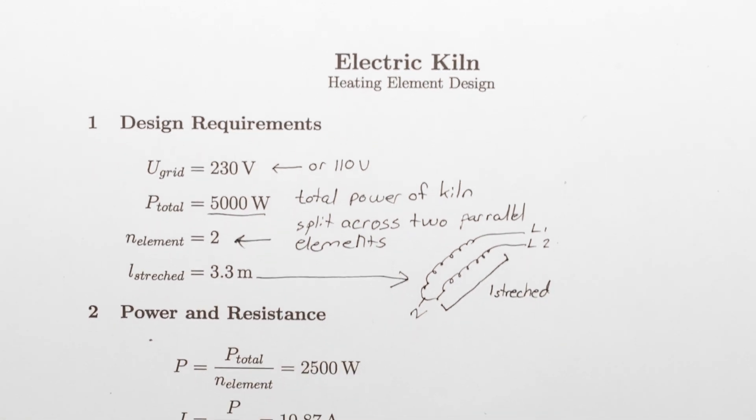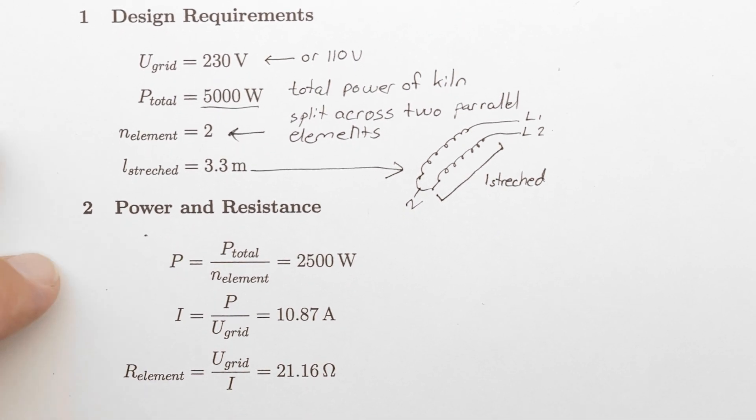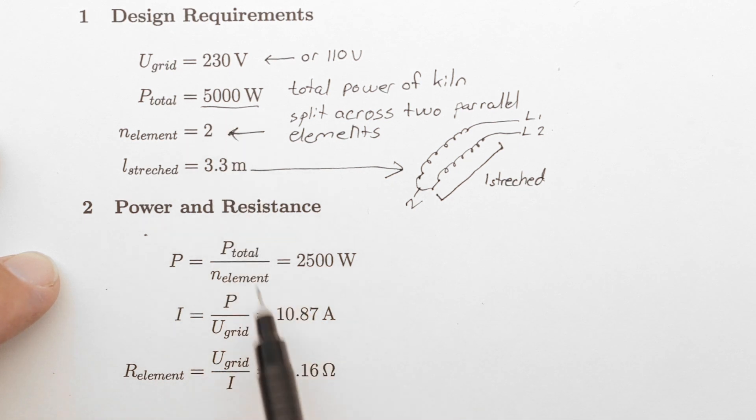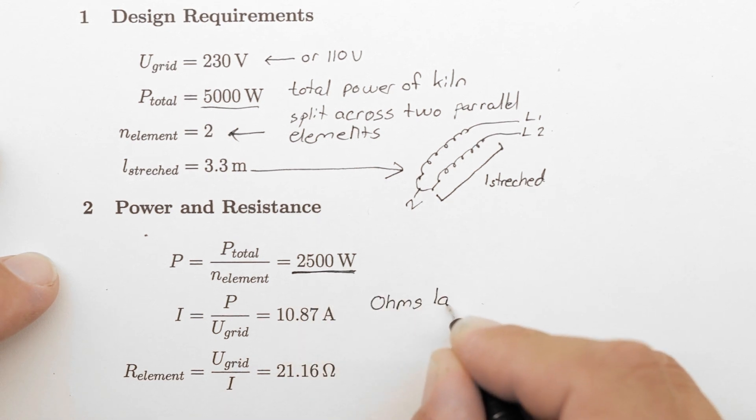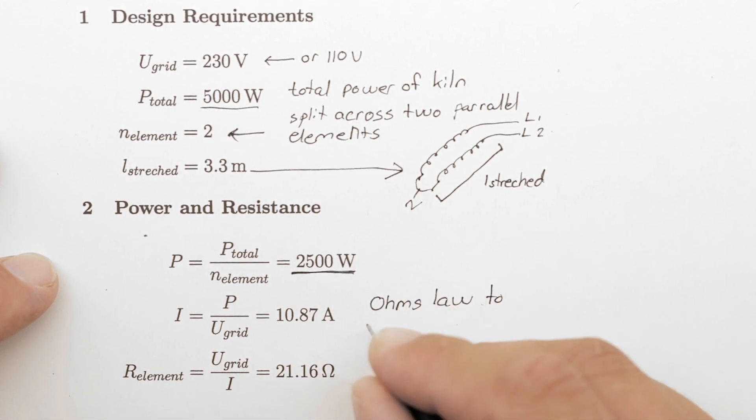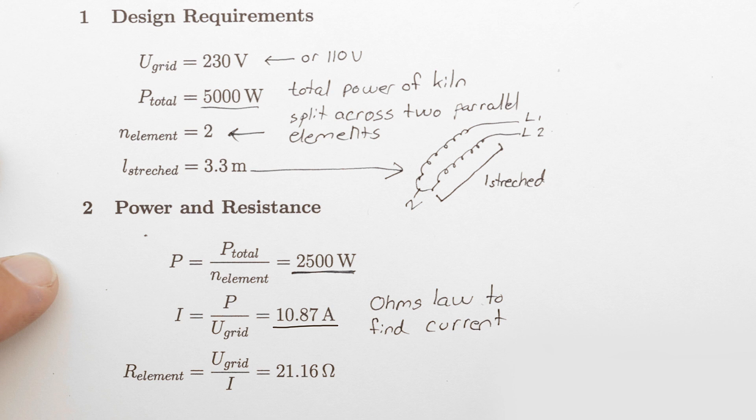Now we can determine the current and resistance required to obtain the desired total power level. The power of each element is simply the total power divided by the number of elements, giving us 2.5 kilowatts. Ohm's law can be applied to calculate the needed current to obtain 2.5 kilowatts when running at 230 volts. Just below 11 amps, which is easily provided by the 16 amp breakers in my current workshop.